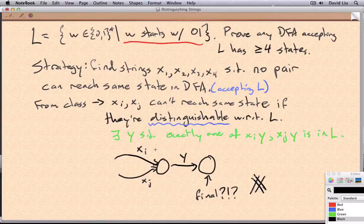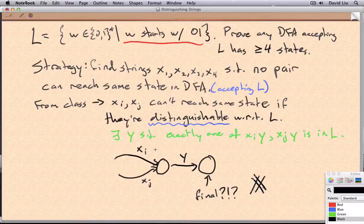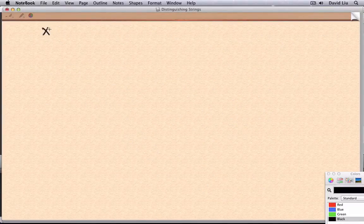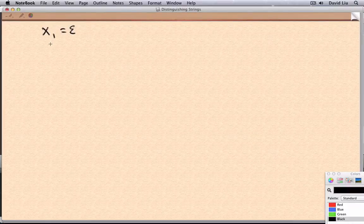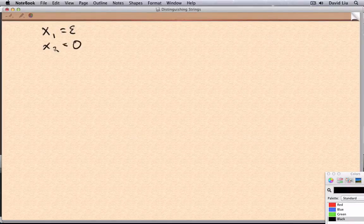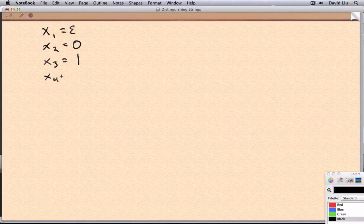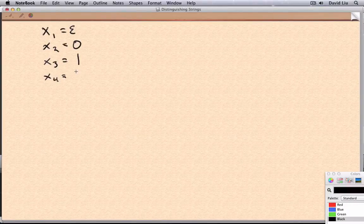So don't let yourself get confused by trying to use the same Y for distinguishing all six pairs of strings, because chances are that actually won't work. So we saw in class that we could basically pick X1 to be the empty string, X2 to be 0, X3 to be 1, and X4 to be 01.